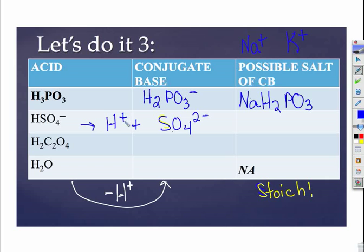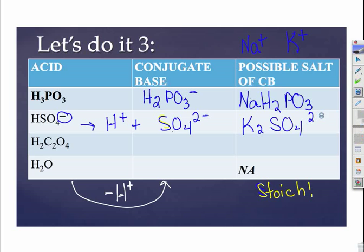The charges balance on both sides — plus one minus two equals the minus one on the other side. So that's sulfate, and we could add potassium sulfate to get that conjugate base into solution if we needed it — maybe for a buffer or a common ion.